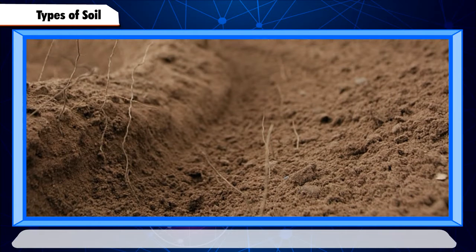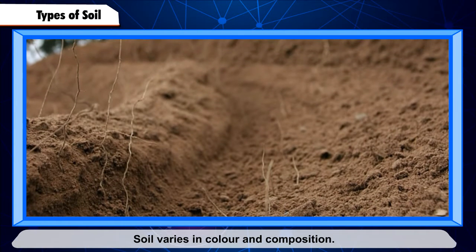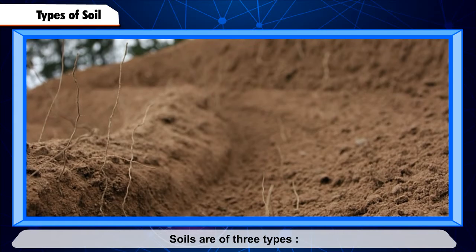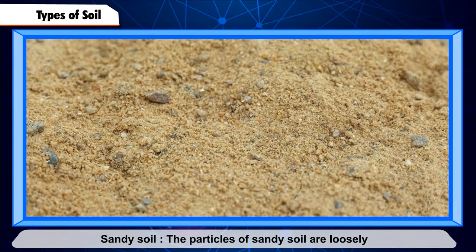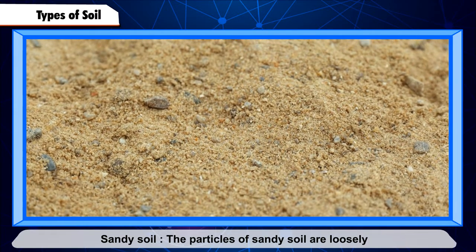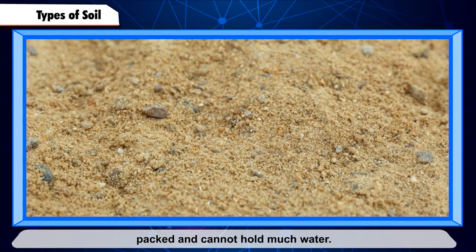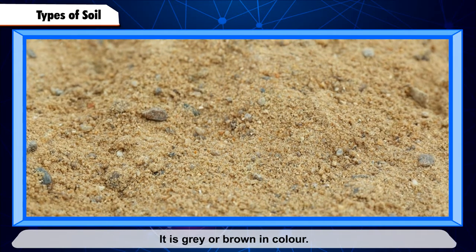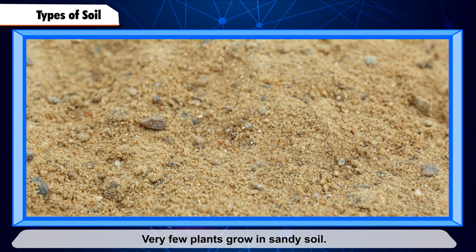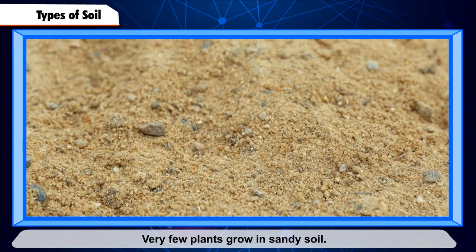Types of Soil: soil varies in color and composition. Soils are of three types. Sandy soil: the particles of sandy soil are loosely packed and cannot hold much water. It is gray or brown in color. Very few plants grow in sandy soil.